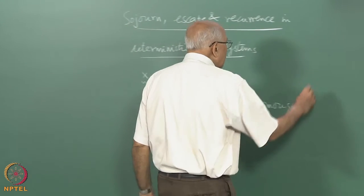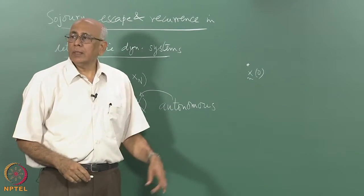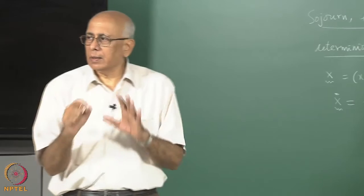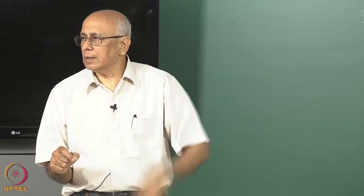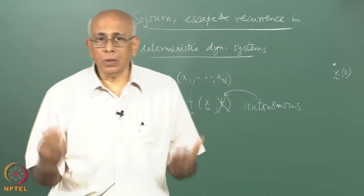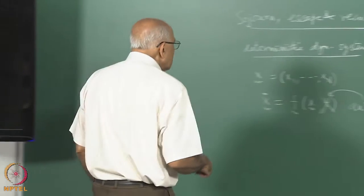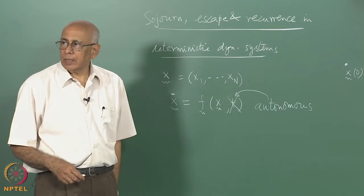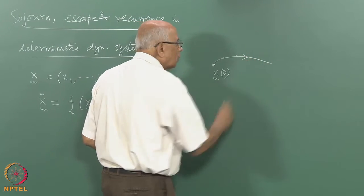The state of the system at any point is specified by giving x at any instant of time, say x at time 0. A point in this n-dimensional space tells you all the values of the variables at the initial instant of time. Once you solve the set of equations, in principle you know the values at later instances. The explicit solution in closed form may not be possible if the function is nonlinear with a large number of variables. What is possible is to do numerical integration so that, instant by instant with a sufficiently small time step, you can numerically integrate and find the phase trajectory.